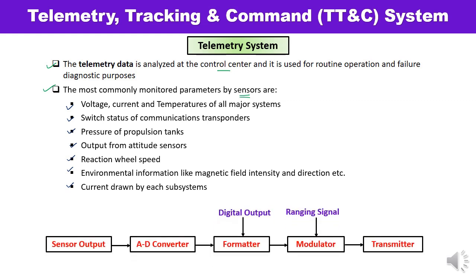Looking at the telemetry data flow diagram: data received from sensors is first converted by an analog-to-digital converter, then passed through a formatter and modulator before being transmitted. Usually hundreds of sensors are required to monitor telemetry data. When the satellite is in the transfer orbit, the telemetry transmitter is connected to the traveling wave tube amplifier in the satellite repeater.